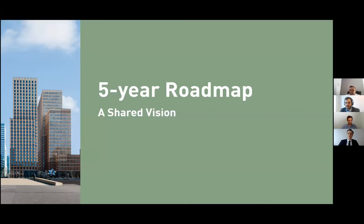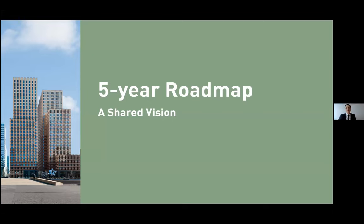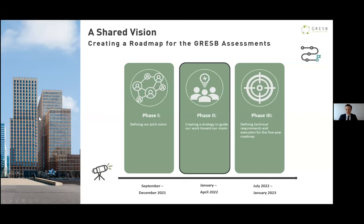Before I hand over to my colleagues, let me briefly provide a short overview of the GRASB assessment roadmap process. In a nutshell, the GRASB assessment roadmap process is an 18-month process which started back in September last year. Its main purpose is to redevelop the GRASB standards for both real estate and infrastructure for the years to come. The process is divided into three phases, where the key objective of phase one was to define, in collaboration with industry, the vision for the GRASB standards for the future.